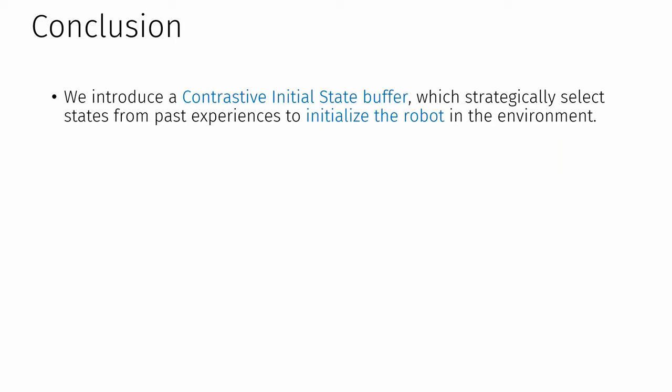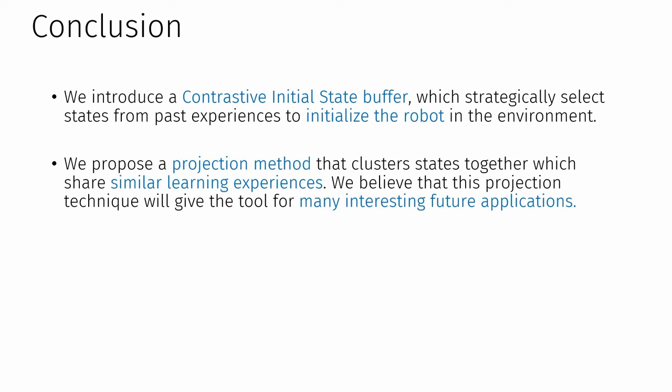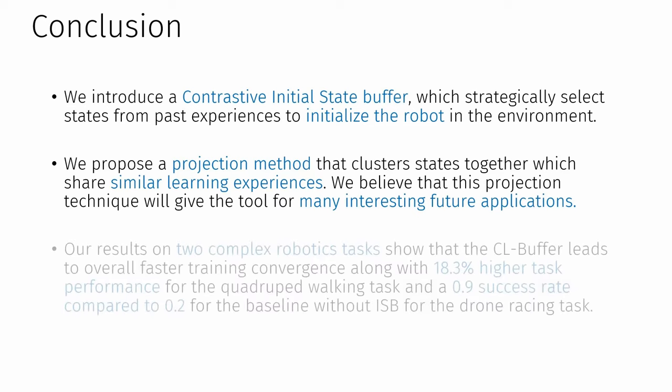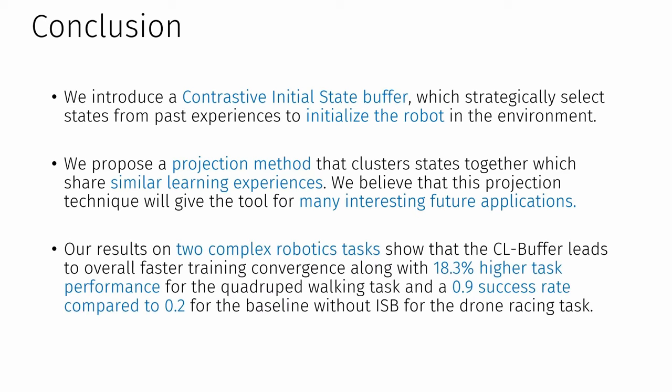In conclusion, we introduce a contrastive initial state buffer which strategically selects states from past experiences to initialize the robot in the environment. Additionally, we propose a projection method that clusters states together which share similar learning experiences. We believe that this projection technique will give the tool for many interesting future applications. Finally, our results on two complex robotics tasks show that the CL buffer leads to overall faster training convergence along with 18.3% higher task performance for the quadruped walking task and a 0.9% success rate compared to 0.2% for the baseline without ISB for the drone racing task.